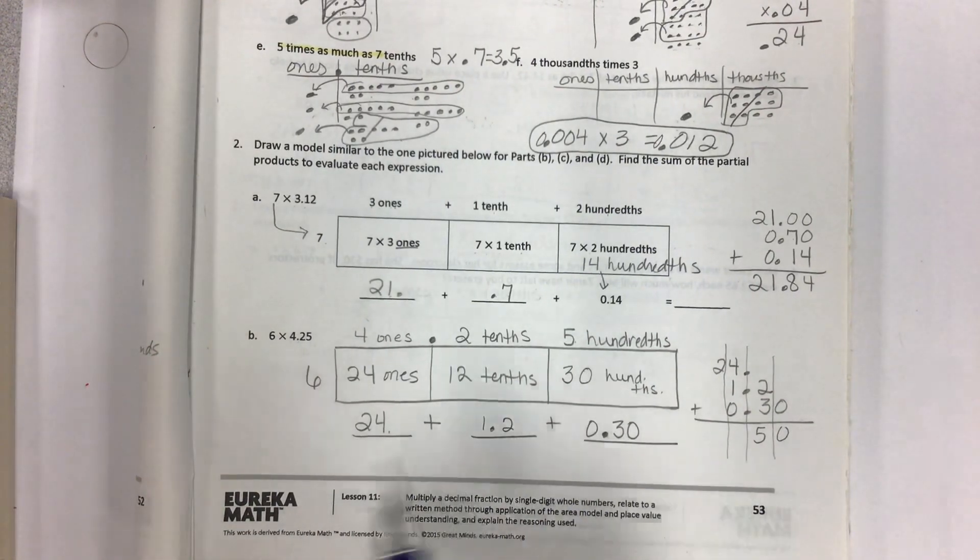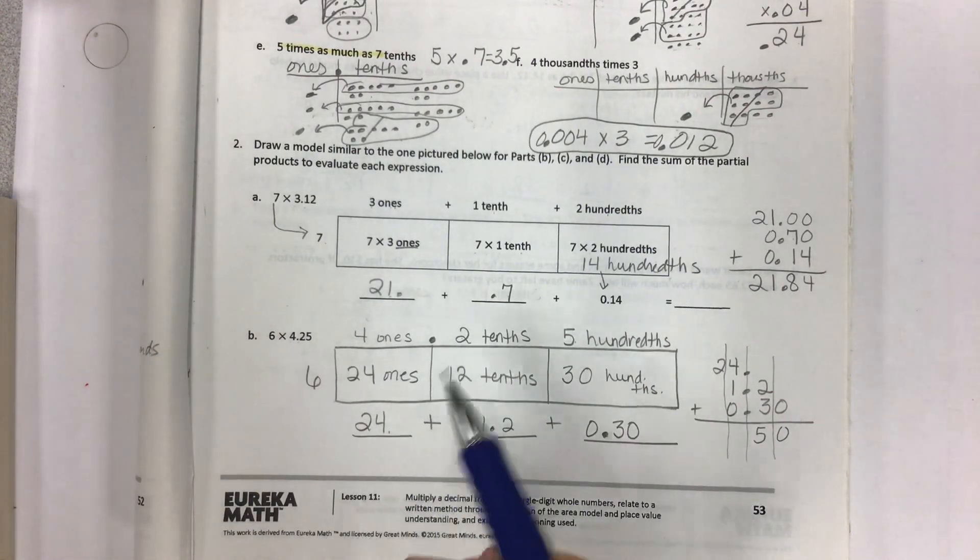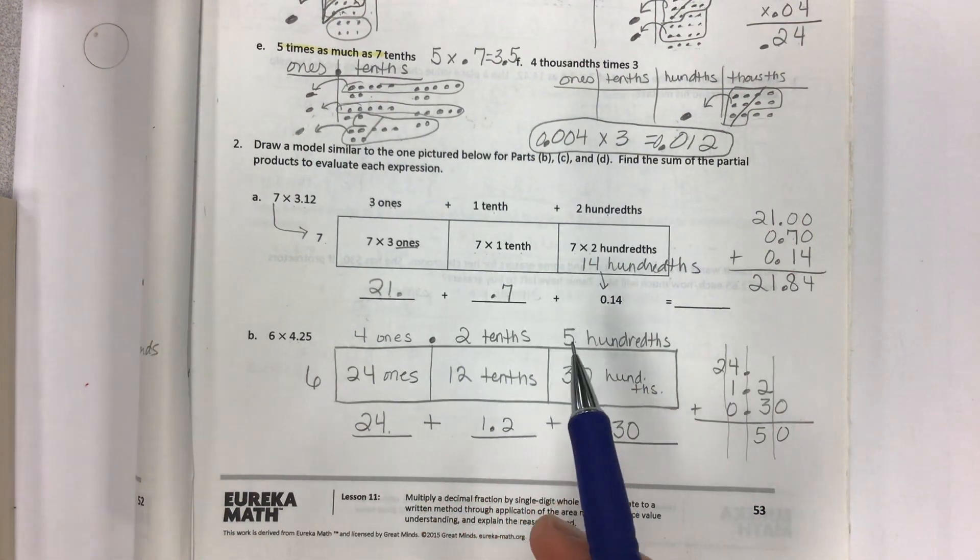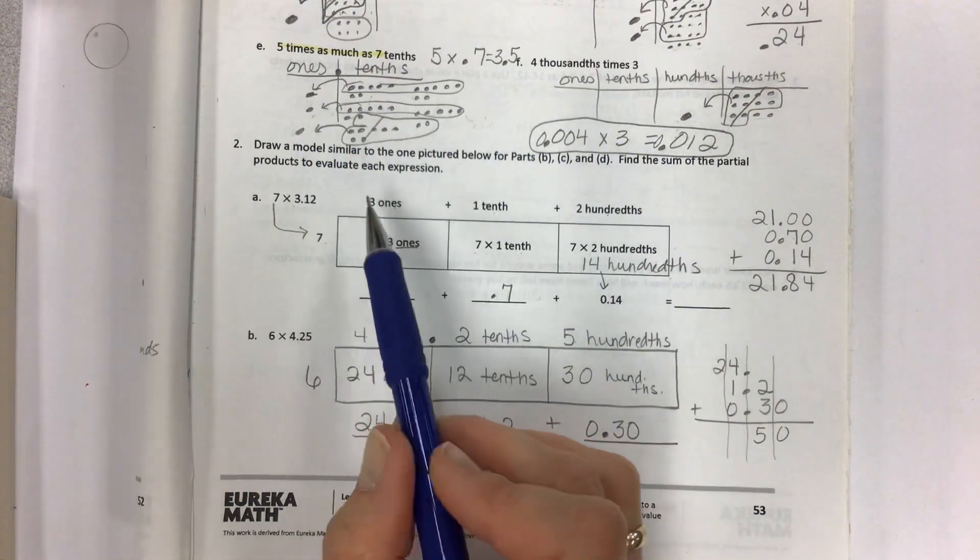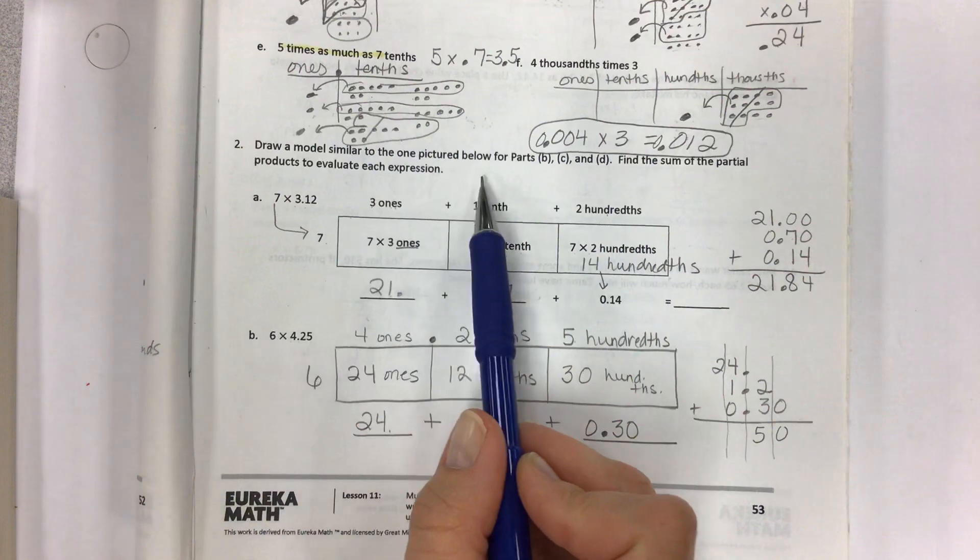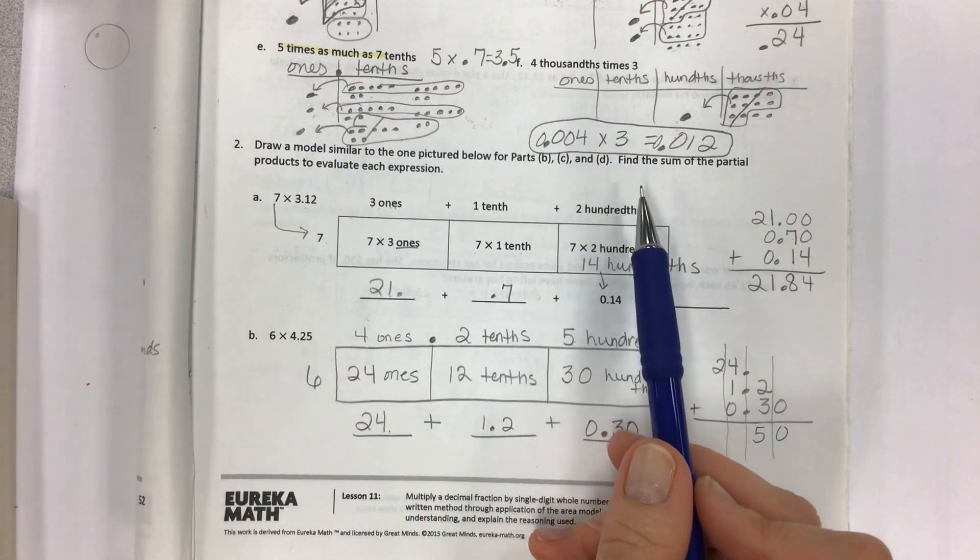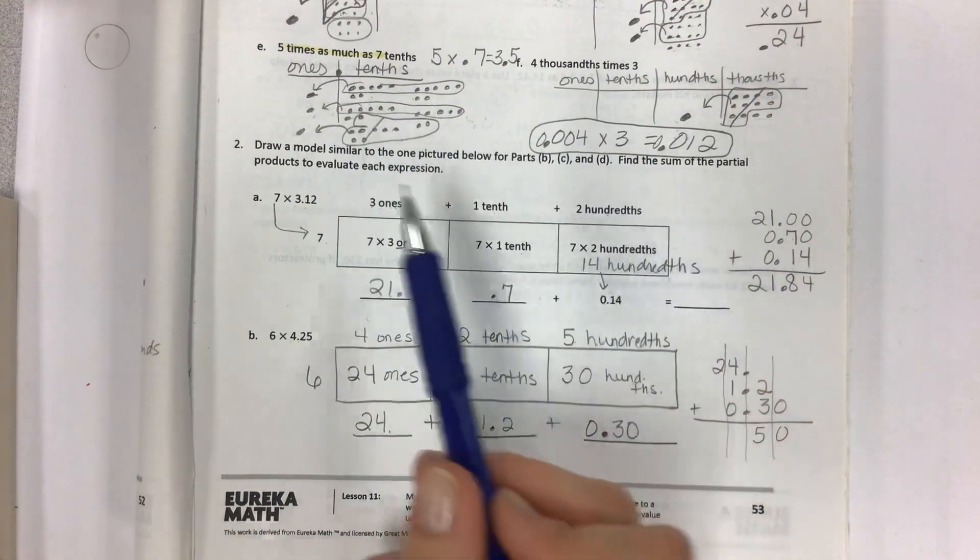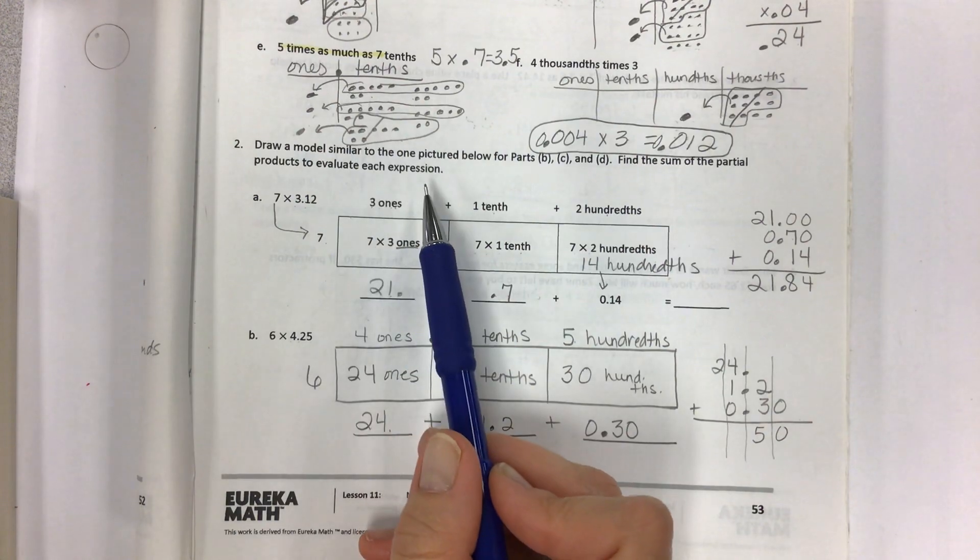Four thousandths times three equals twelve thousandths. Remember the two ends up in the thousandths place. And you can have a zero here. And sometimes I just don't finish that off, but that's what it would look like in the book. So moving on to number two, then we have the unit form. And they have these little blocks in these models. And yes, you are going to see these for a little bit. So it says draw a model similar to the one pictured below for parts B, C, and D. Find the sum of the partial products to evaluate each expression.